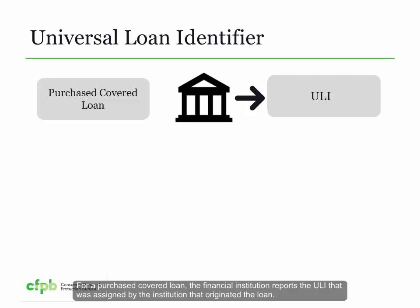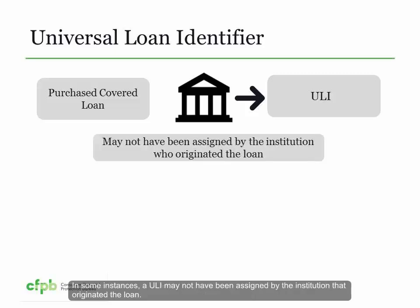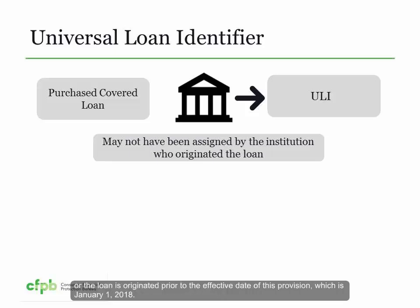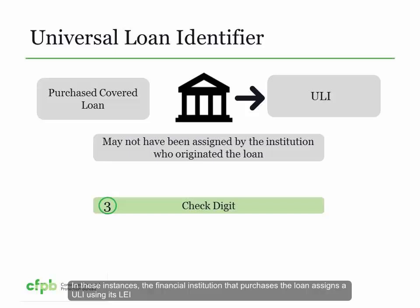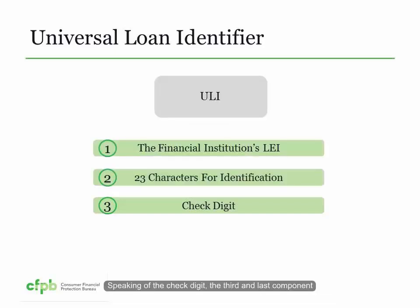What does unique mean for the purposes of the ULI? It means the ULI is unique within the institution and used only for the covered loan or application. A financial institution should assign only one ULI to any covered loan or application, and each ULI should correspond to a single application and ensuing loan. The ULI must not contain information that can be used to directly identify the borrower or applicant, including the applicant's name, date of birth, social security number, government-issued driver's license, passport number, alien registration number, or employer or taxpayer identification number.